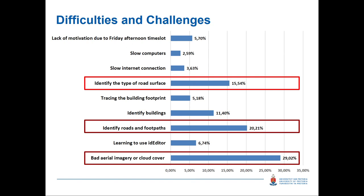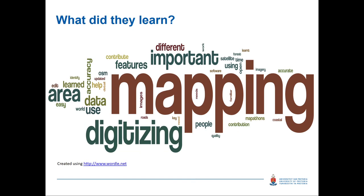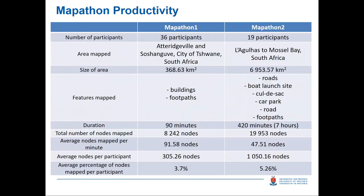Those imagery issues can be counteracted if you use your own imagery, but in a mapathon you typically don't have the budget for that. Since this is a university setting where students are supposed to learn, we also asked what they actually learned during the mapathon. The biggest thing they learned was the importance of mapping and digitizing — they clearly learned the importance of digitizing, how to do it accurately, and how they can contribute data. They also learned about OpenStreetMap itself, which we were quite happy with.